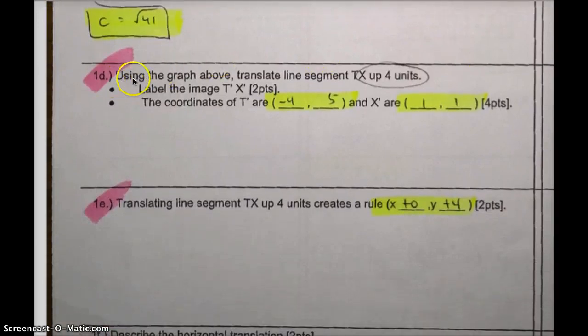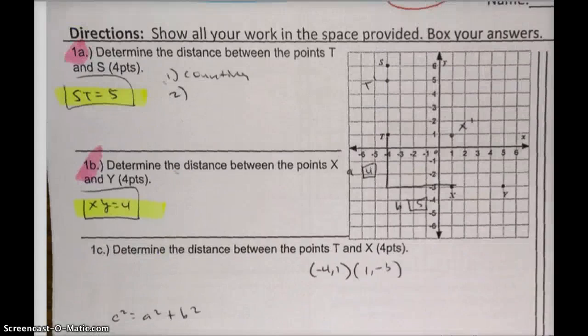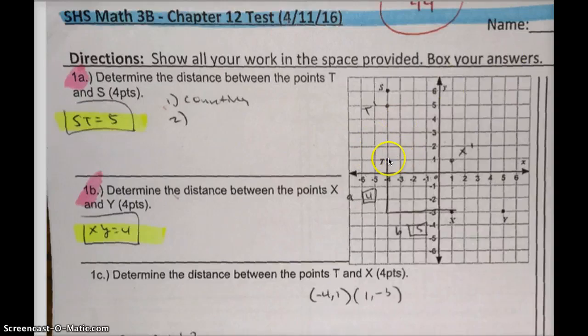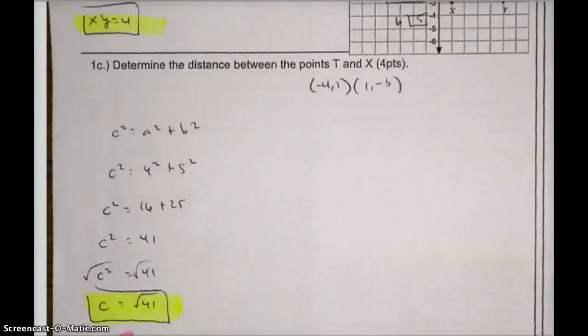Question 1d. Using the graph above, translate line TX up 4 units. So all you have to do is, here's T, here's X, move it up 4 units: 1, 2, 3, 4, and then you just write down the coordinates. So that would be negative 4, positive 5. And X prime would be right 1, up 1. So 1, 1 would be the coordinates.